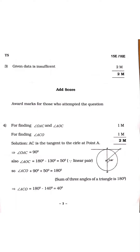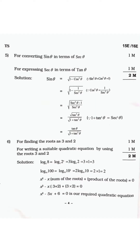For Question 3, the given data is insufficient, so those who have attempted this will get two marks. For Question 4 — finding angle OSC and angle AOC — if you are finding these two angles you will get one mark, and if you are finding angle ACO you will get one mark, totaling two marks. You can see in the solution how to find it.